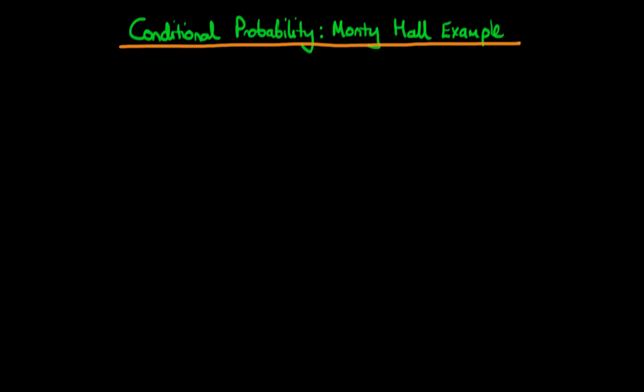In this video I want to give another example of the uses of conditional probability, and the example I'm going to be talking about is a well-known example called the Monty Hall problem.